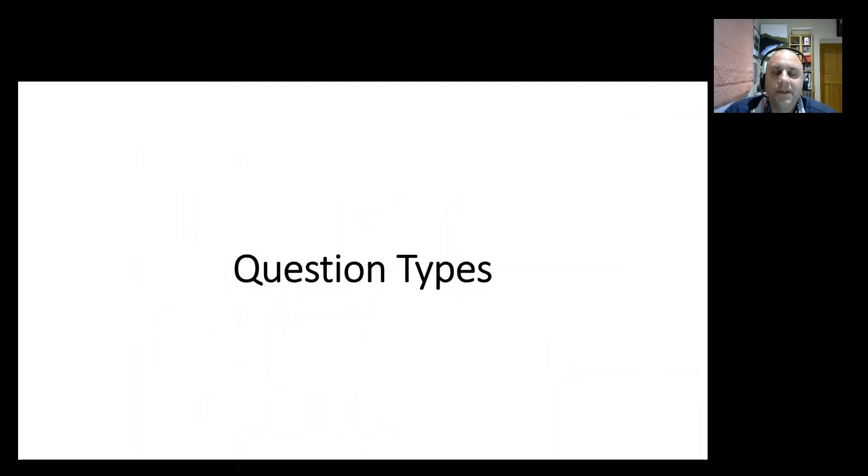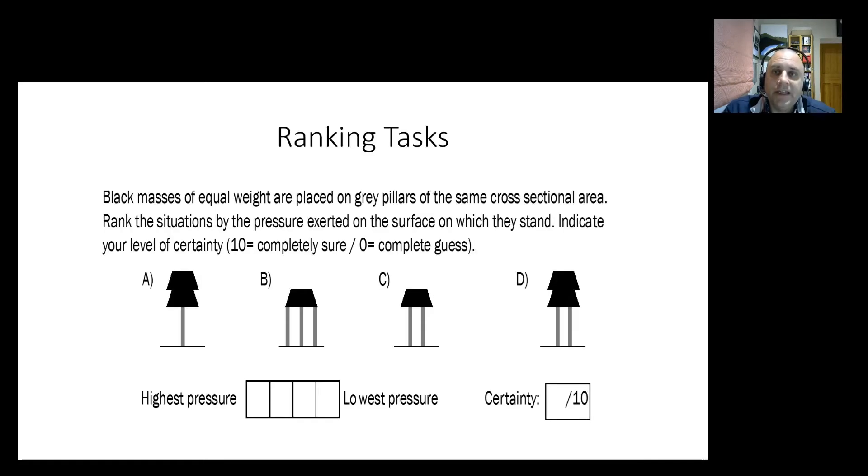Just want to mention two question types that I think are worth sharing. The first coming from physics education research is these ideas of ranking tasks. So these were developed as part of a research project to really get students to think deeply about questions and not just quickly find the right answer, tick it in and move on. The strength of these questions is students are required to engage with all of the possible answers. And in this particular case, rank all of them to see which is the highest pressure, which is the lowest pressure. So it just is a way to really make students engage with questions and to see what's going on. And you also see that it's asking for a certainty or a confidence level. And that's quite interesting. And that's been written about in the research literature. And there's some really interesting work there about certainty and confidence, and also particularly with respect to gender.